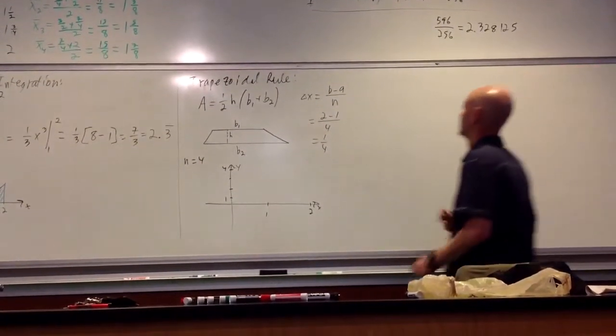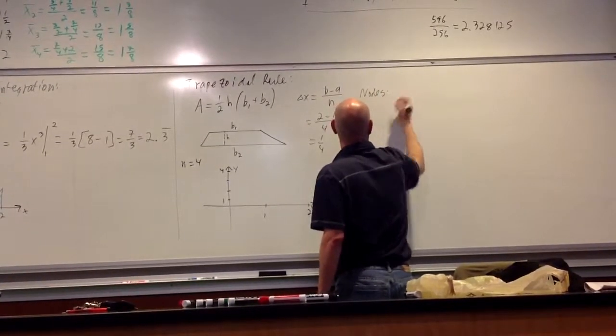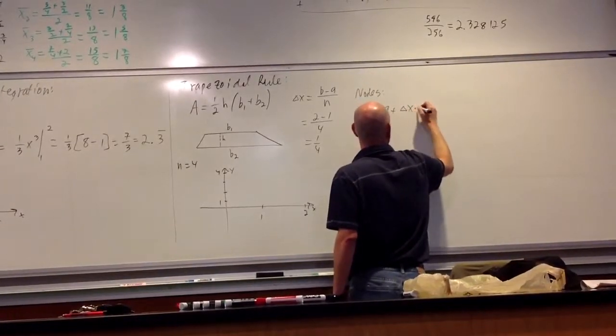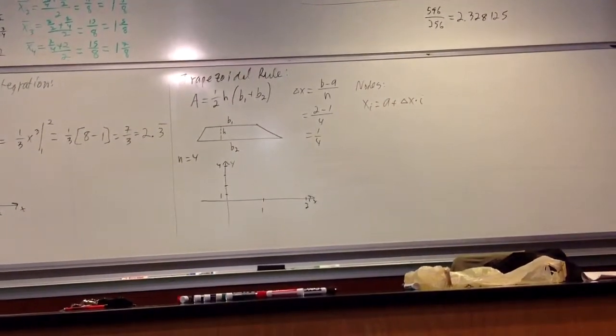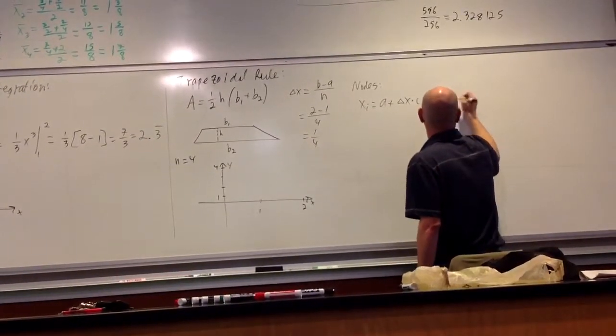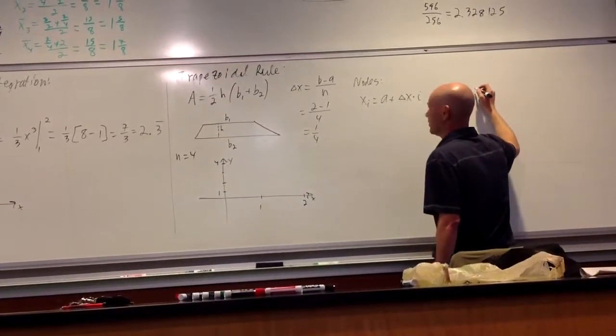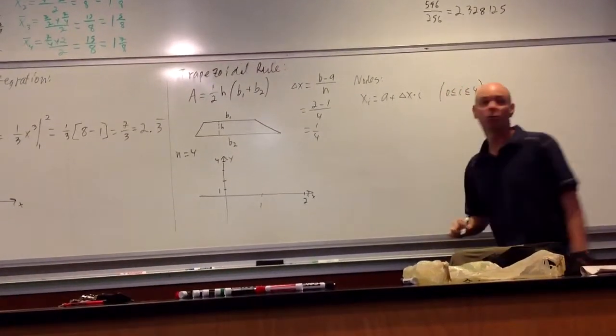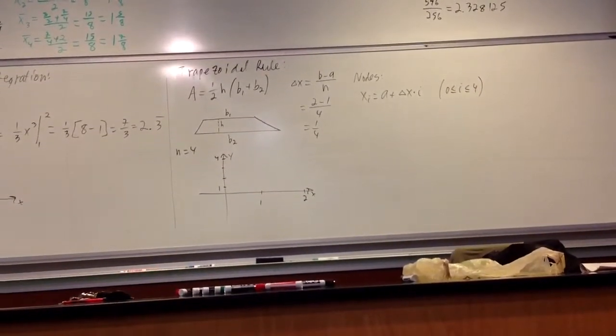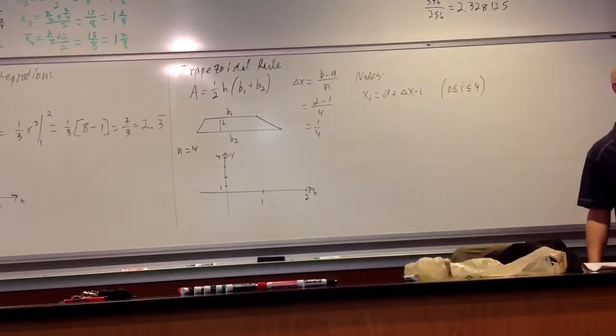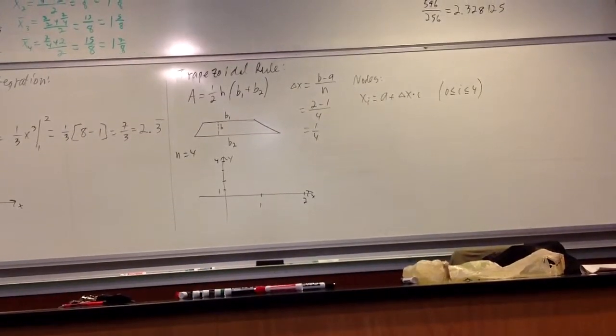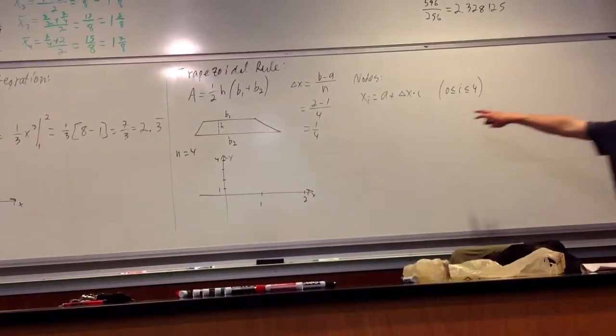That's my delta x. To find my node points, we have this here. In this case, i is going to go from zero to four. Where i is an integer. Our counters usually start at zero or one. If need be, they can start a little bit higher. But I've rarely seen it when a counter like i is negative.